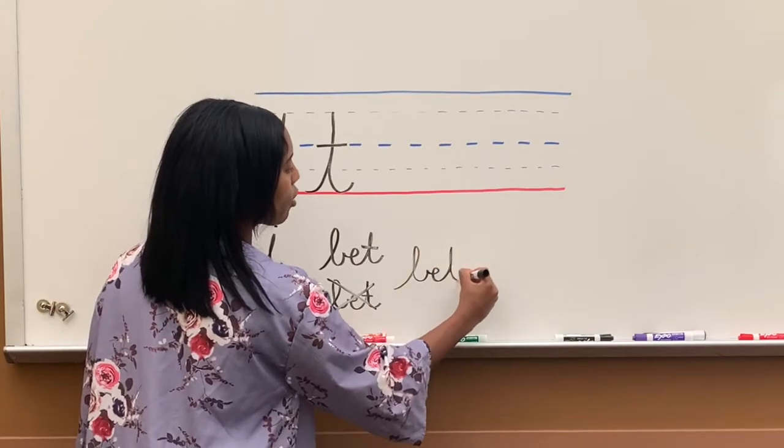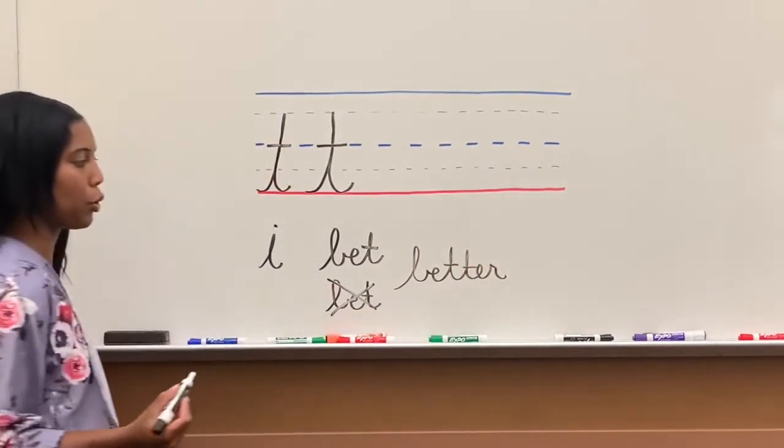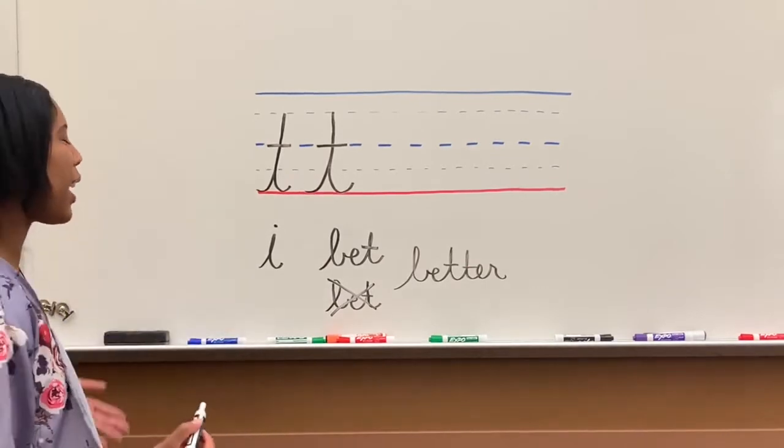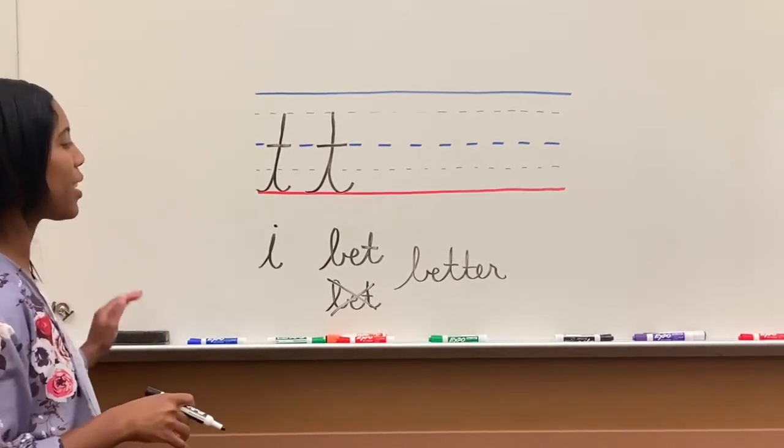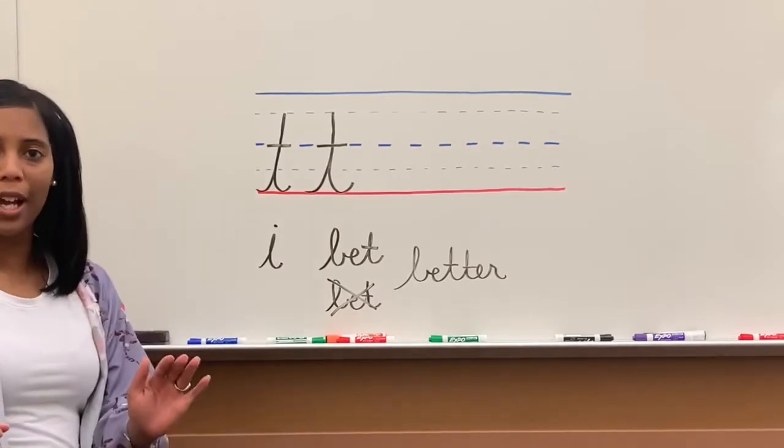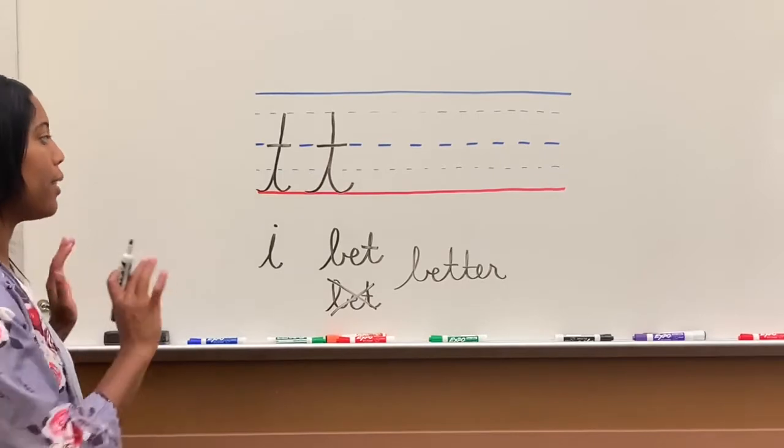And that's not only with T and I and capital F, but we'll get to capital F later. But with T and I, remember, you dot your I and you cross your T after you are finished writing the entire letter.